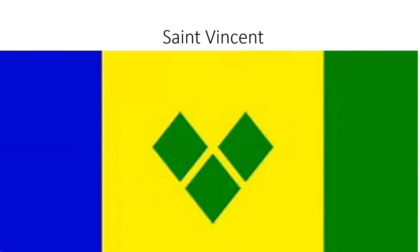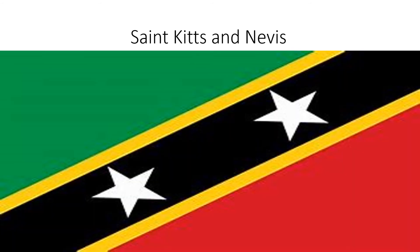St. Vincent: blue, yellow, and green next to each other, and three diamonds in the middle. St. Kitts and Nevis: green triangle in the top corner and a yellow and red triangle in the bottom corner, and there's a black line with two white stars, and two yellow lines around the black line.